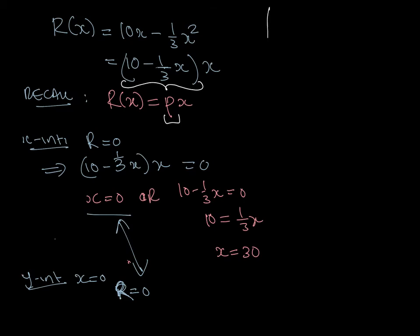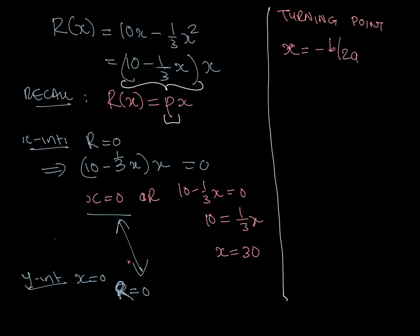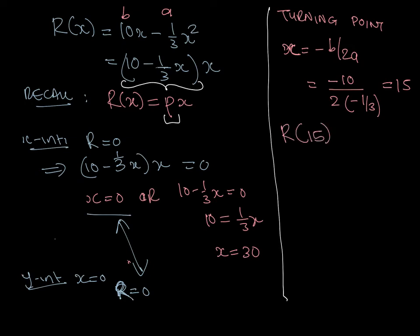The most important thing when sketching a parabola is finding the turning point. The turning point occurs when x equals minus b over 2a. In this example, that gives minus 10 over 2 times minus 1/3, which equals 15. To find the corresponding revenue, I substitute 15 into the revenue function and get 75. So the turning point is at (15, 75).